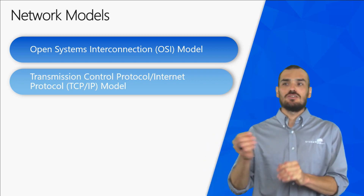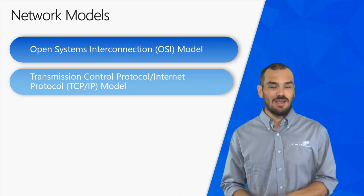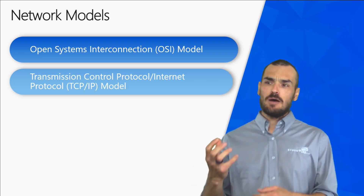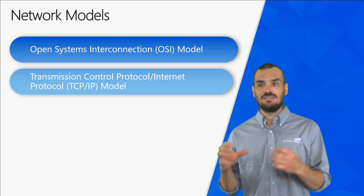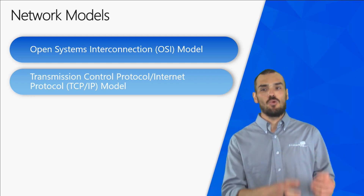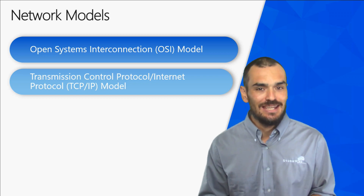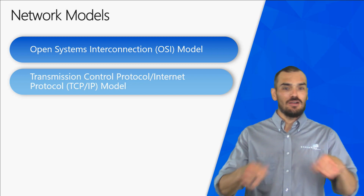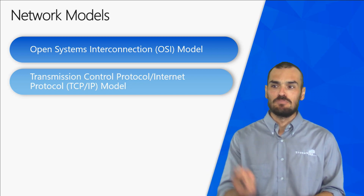We really want to focus on describing the functions of the OSI model layers, and then eventually we'll get to the TCP/IP model layers. We have these network models to help us decompose, compartmentalize, and organize what is happening on our networks. It's kind of like eating a steak — you don't just shove the whole thing in your mouth; you slice and dice it into smaller pieces and chew it one bite at a time.